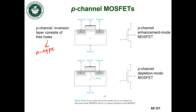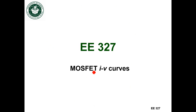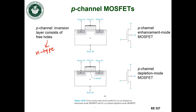For the depletion mode MOSFET, same thing as the N-channel one, I already have a channel and inversion layer created between the source and the drain. So I can get current to flow between the source and the drain even if I don't apply any voltage. If I want to turn off that channel and make it so that current cannot flow between the source and the drain, in that case I have to apply a voltage. So this transistor is on with no applied voltage — the depletion mode — and the enhancement mode is off with no applied voltage.